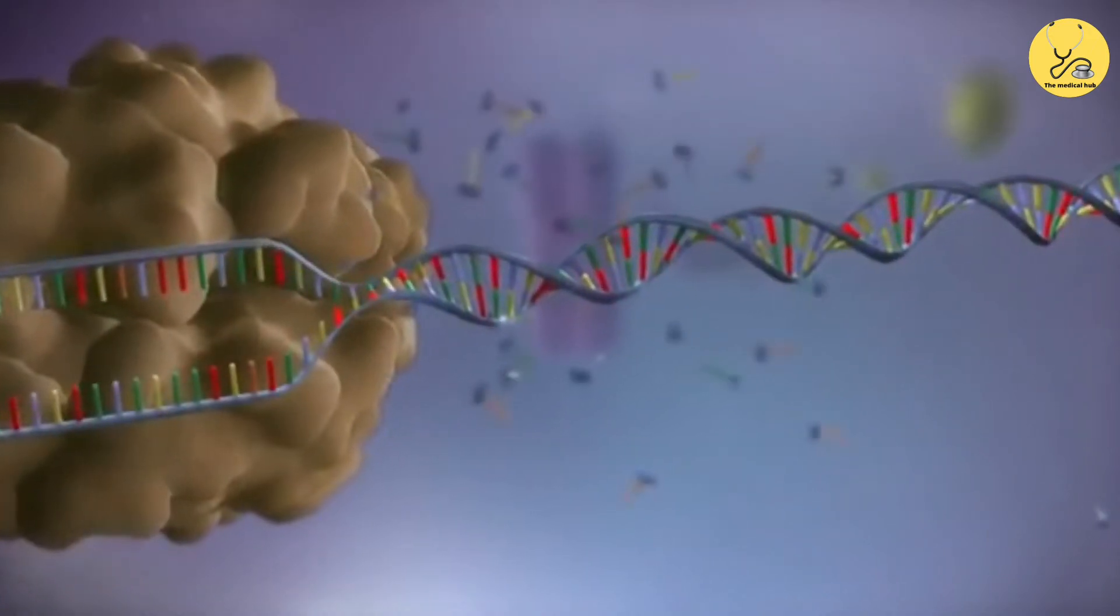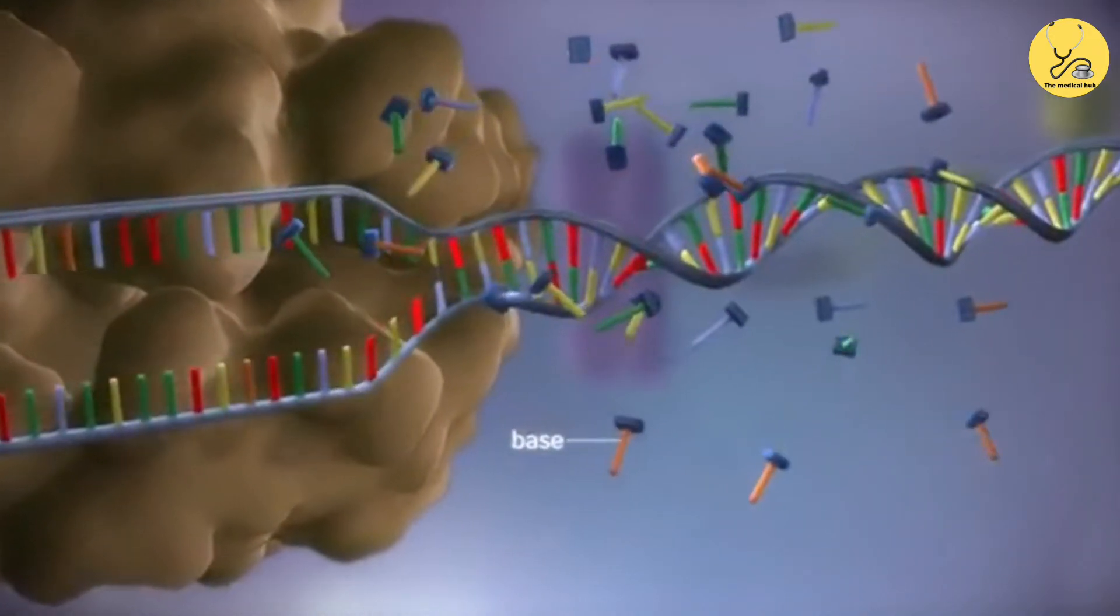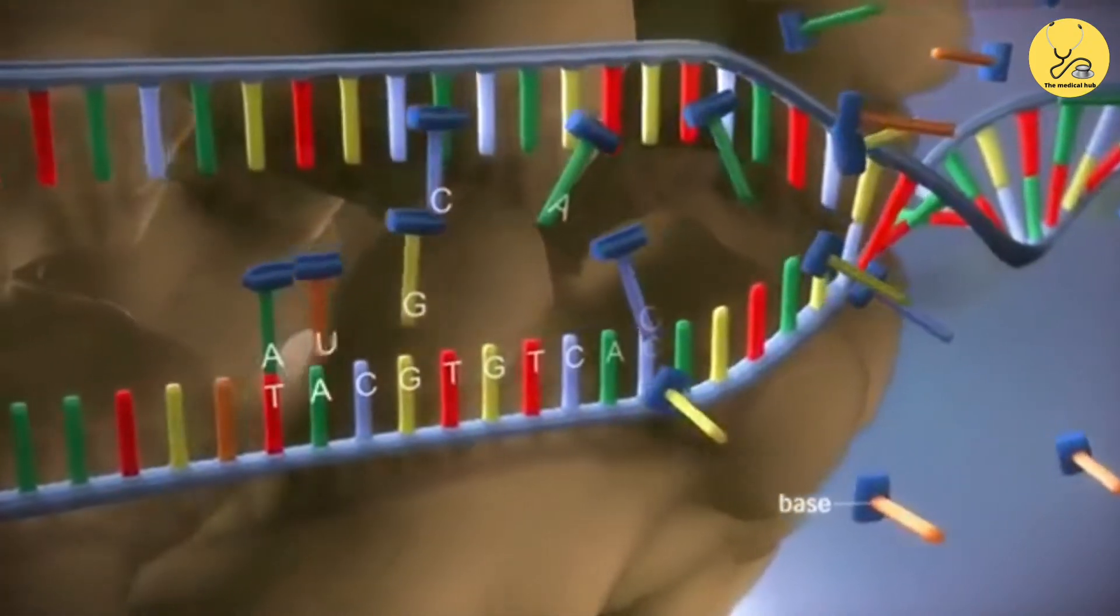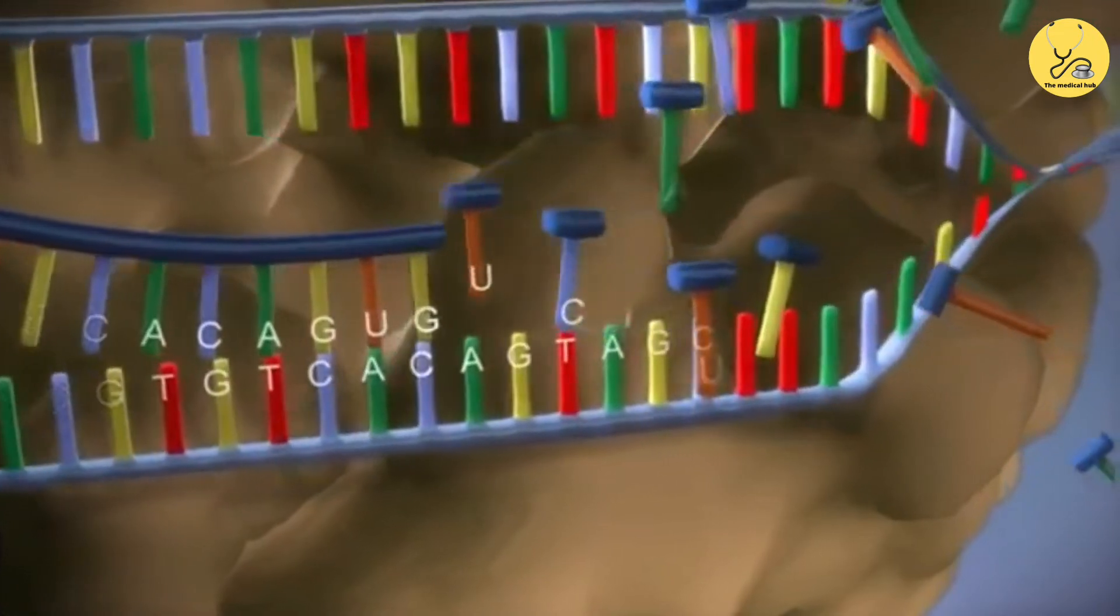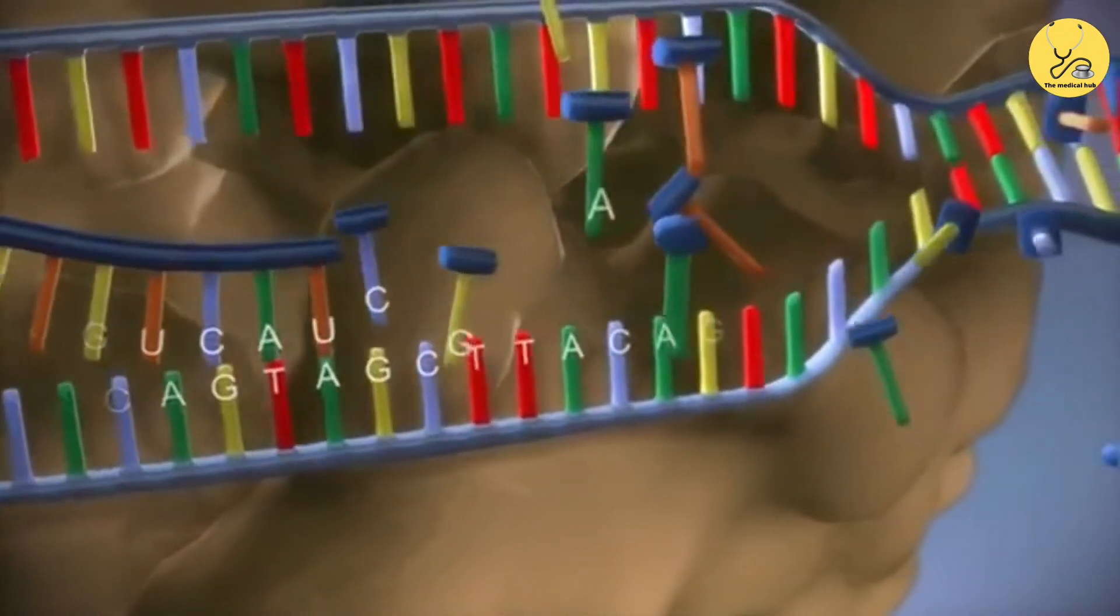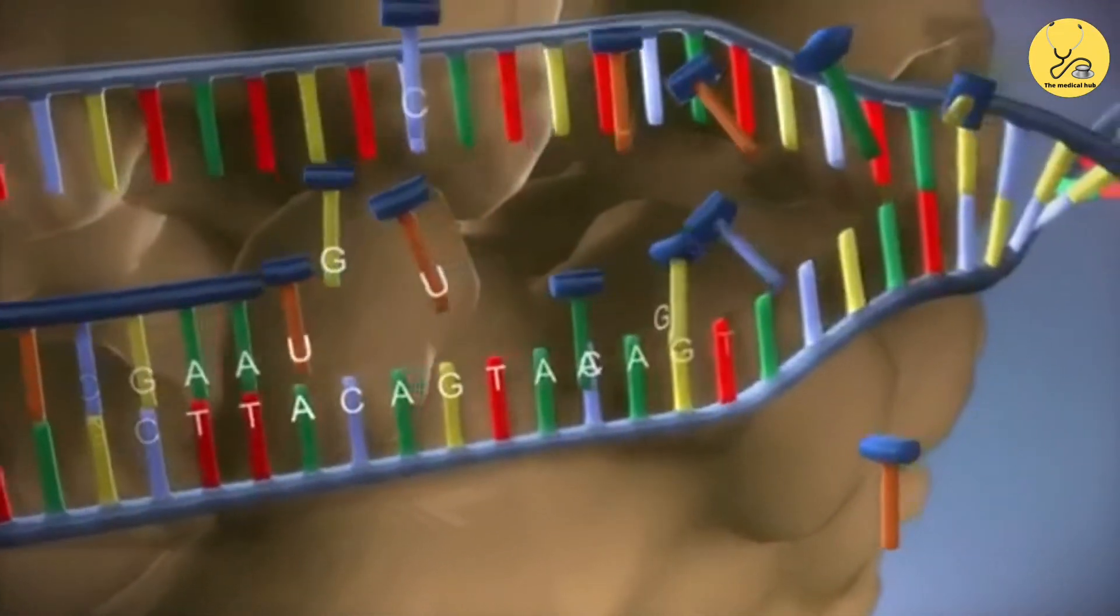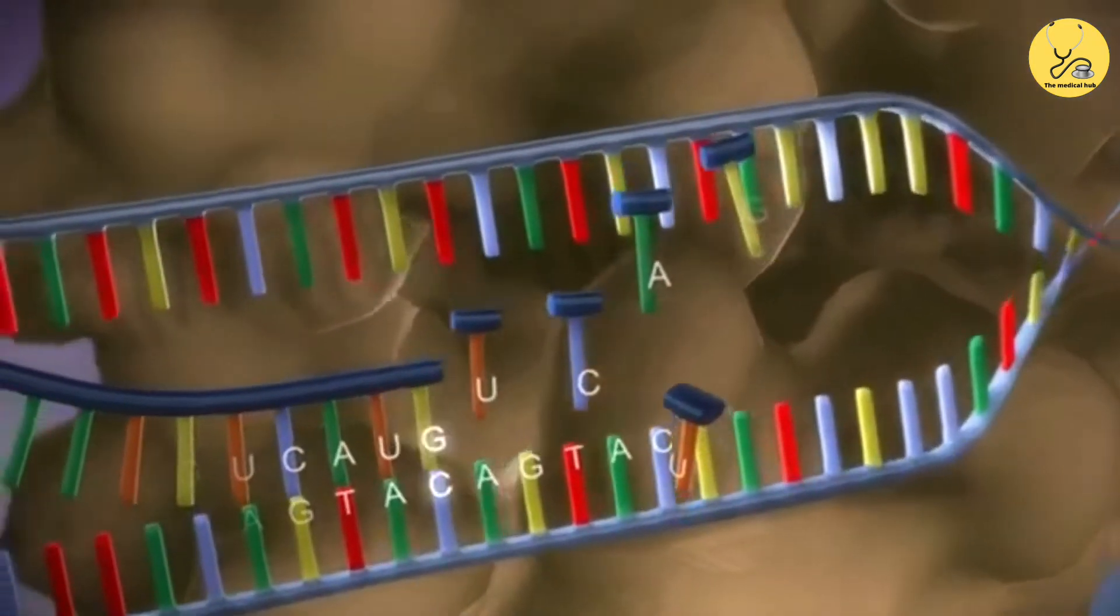It moves along the DNA, making a strand of messenger RNA out of free bases in the nucleus. The DNA code determines the order in which the free bases are added to the messenger RNA. This process is called transcription.